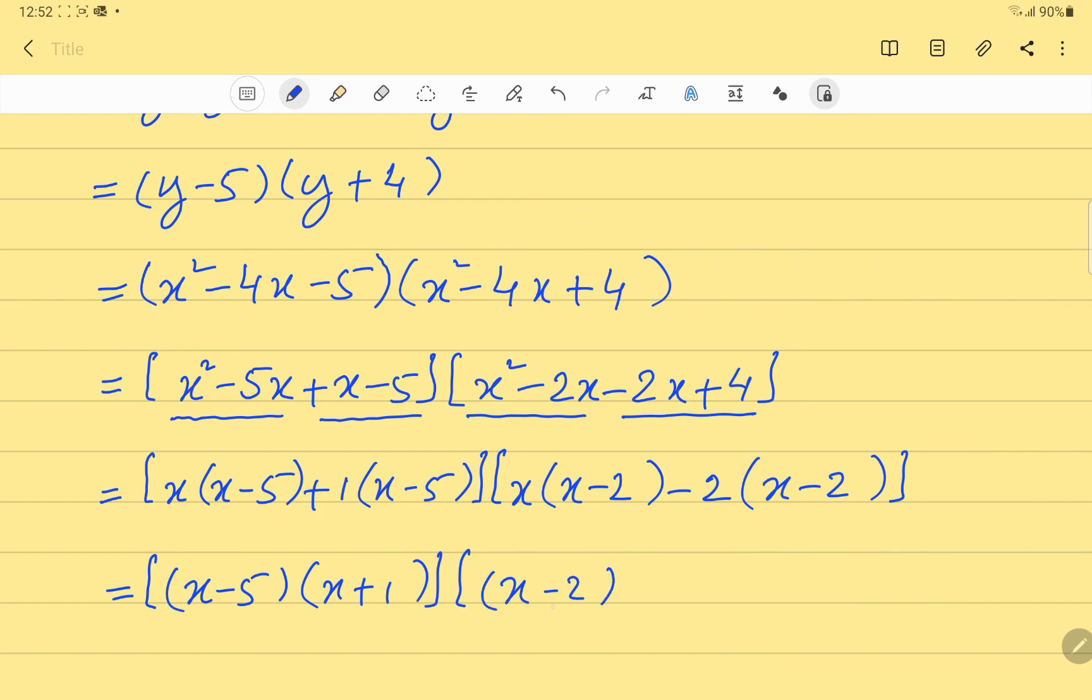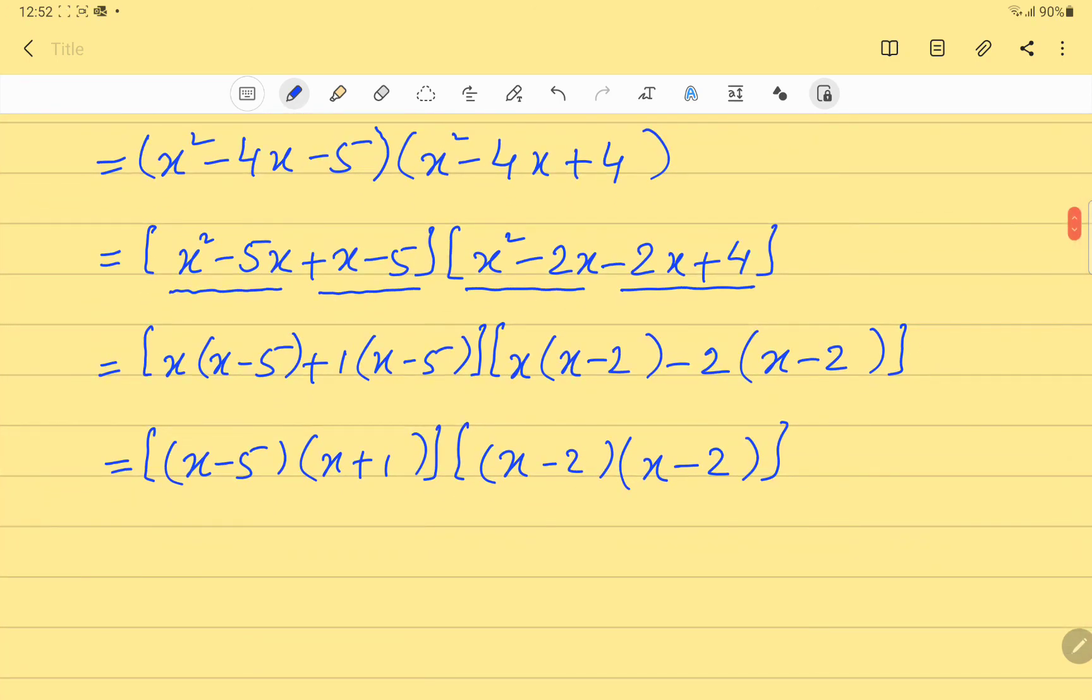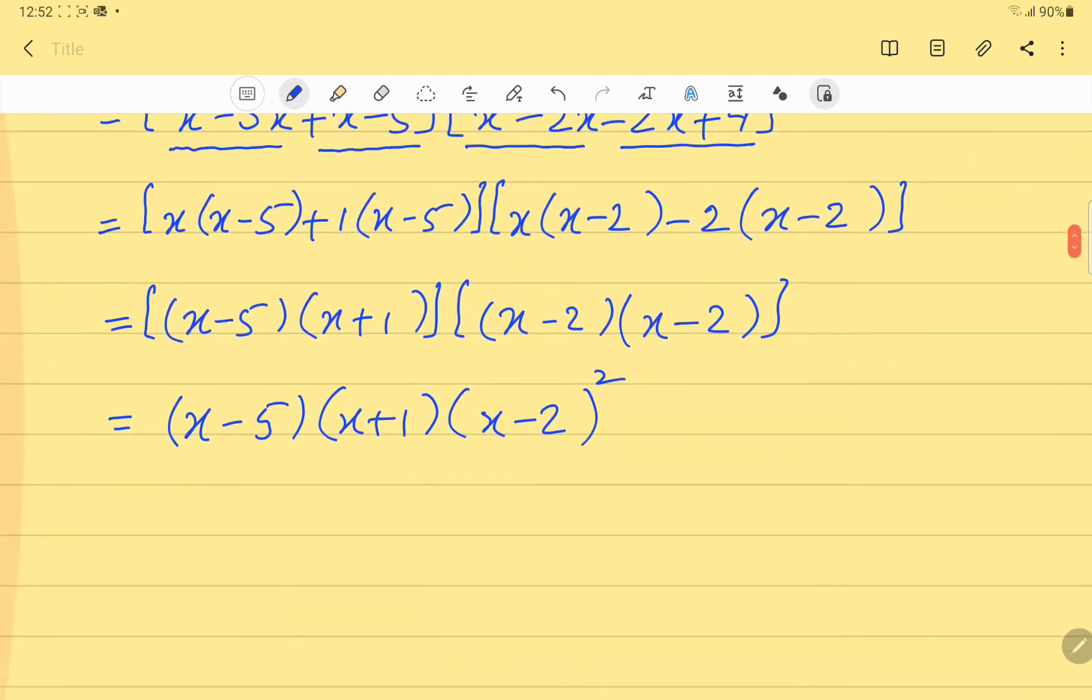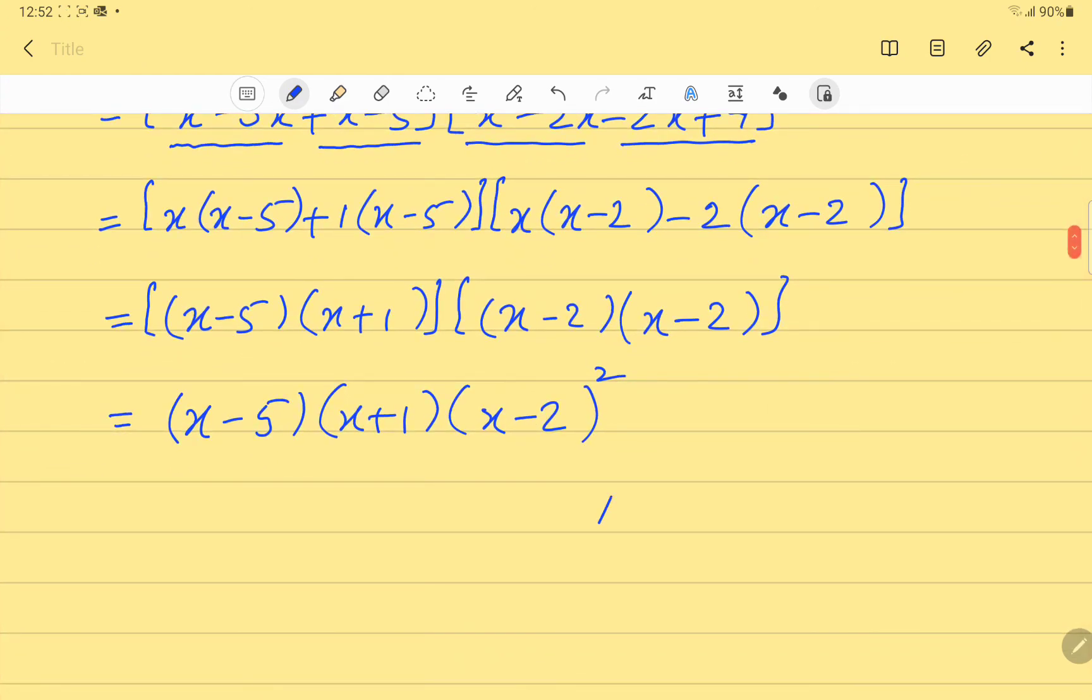And the second one, (x minus 2) is common, and again in the second bracket comes out to be (x minus 2). So we can write it as (x minus 5)(x plus 1) and square of (x minus 2). And this is the answer of this question.